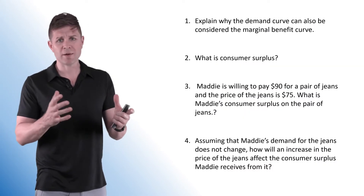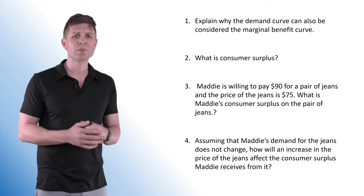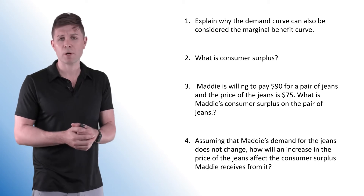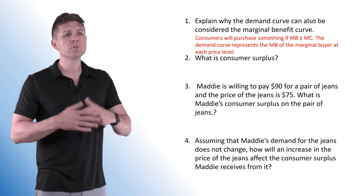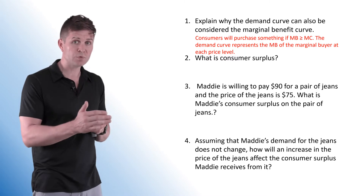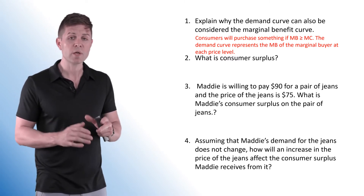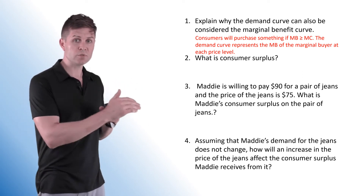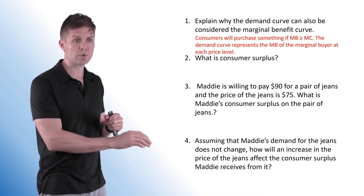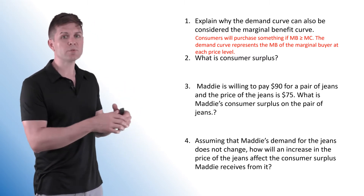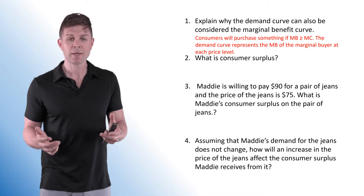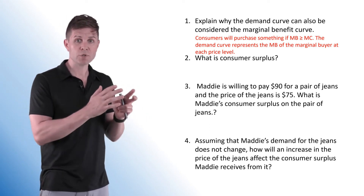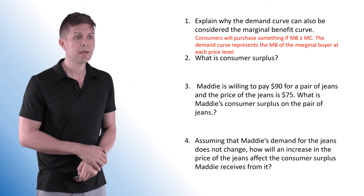The first four questions are pretty much just some definition type questions, looking at the different wording that might exist in these types of questions. The first one asks: explain why the demand curve can also be considered the marginal benefit curve. Consumers will purchase something if the marginal benefit is equal to or greater than the marginal cost. As price goes down, quantity demanded goes up because new consumers join the market. At any given point on the curve, it represents the marginal buyer — the first person that will leave the market if price goes any higher. So the marginal benefit curve is also our demand curve.